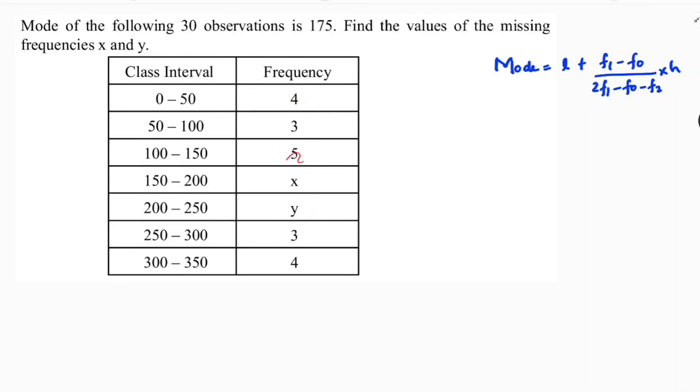See, modal class we used to select by saying the highest frequency, but here in this missing frequency problem, you need to see the answer. The answer 175 lies in between which class, so 175 will come between 150 to 200. So this is the modal class.